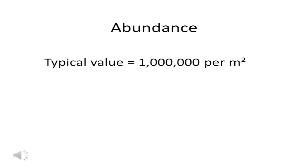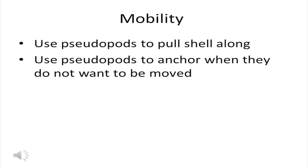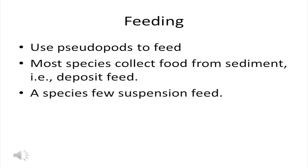Forams are the most abundant of the meiofauna — a typical value might be 1 million individuals per square meter. Forams can move; they use the pseudopods to pull the shell along. If they want to remain immobile, they can use the pseudopods to anchor. Foraminifera use their pseudopods to feed. Most species collect food from the sediment surface and are deposit feeders. A few species use their pseudopods to feed on food particles in the near-bottom water and are suspension feeders.